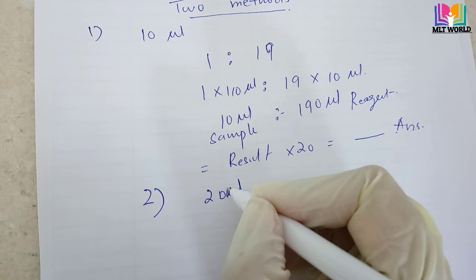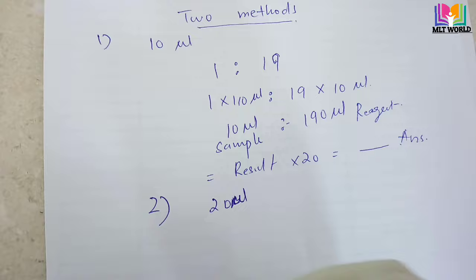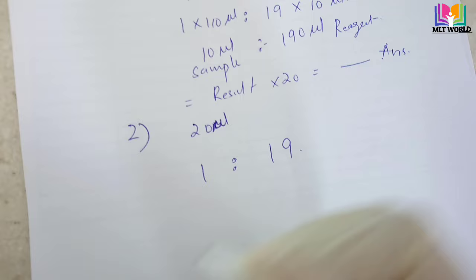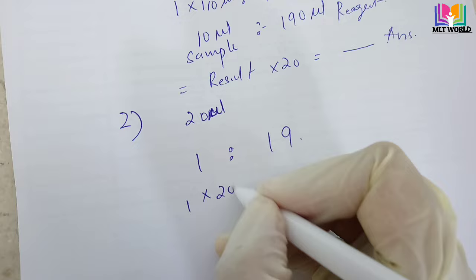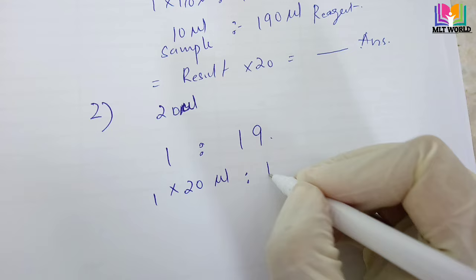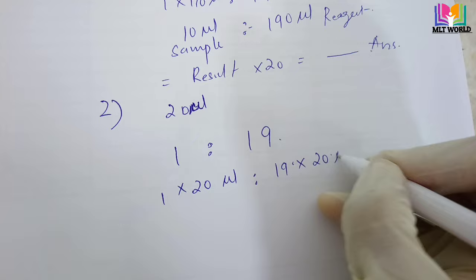Now the second method: if we have a little more sample — 20 microliters — which is also the safer side, then how much do we need? Same 1 is to 20 means 1 part multiplied by 20 microliters gives the sample amount, and 19 parts multiplied by 20 gives the reagent amount.